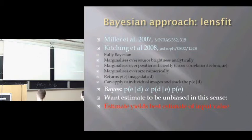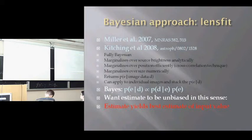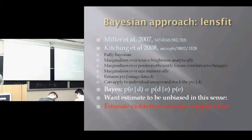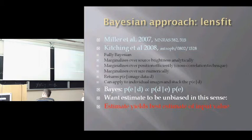The only thing that really goes in is an assumption about the galaxy profile — it differs from something like KSB where one doesn't need to make any profile assumptions, but KSB has other problems. For PSF estimation, LensFit estimates a pixelized PSF at each stellar position and then interpolates the pixel values between each individual PSF pixel value to the position of the galaxy.